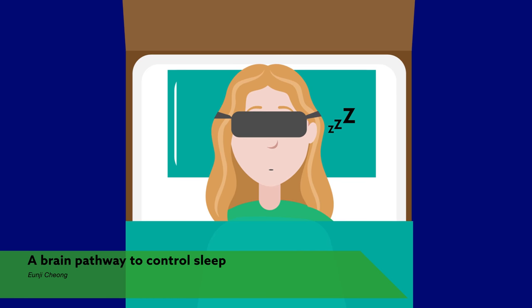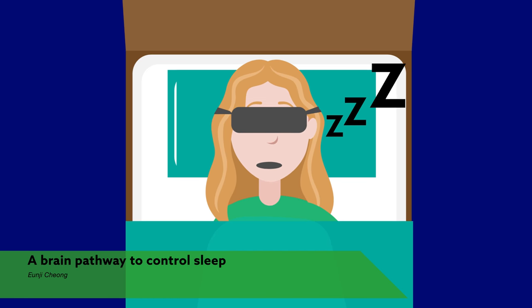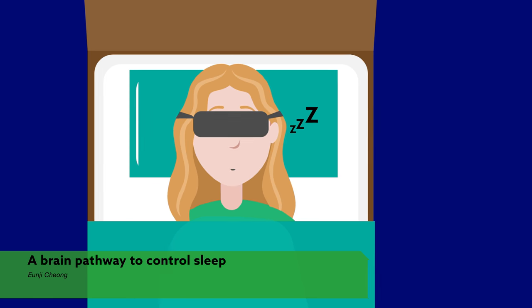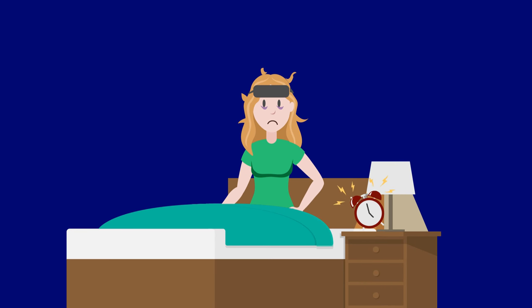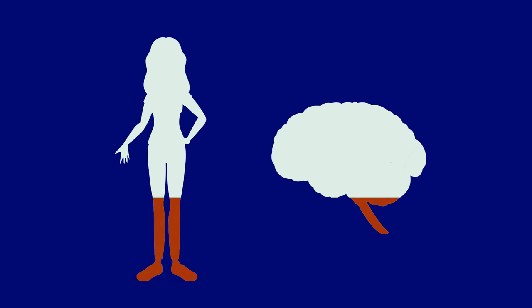Sleep has a profound influence on how we feel and function, but simply clocking a lot of Zs is not enough. The type of sleep matters too. Researchers have long known that a night's rest includes multiple types of sleep, each of which restores the mind and body in a specific way. But how we slip from one type to the next has remained unclear, until now.